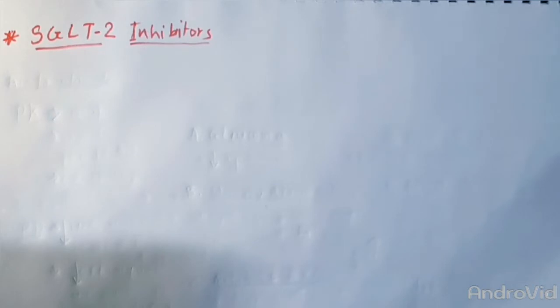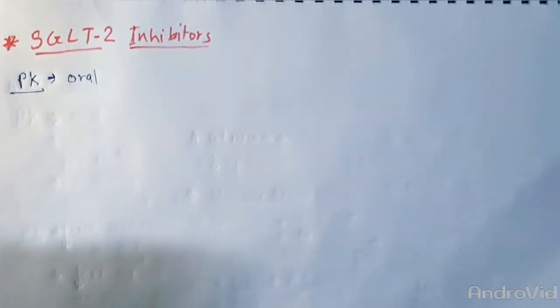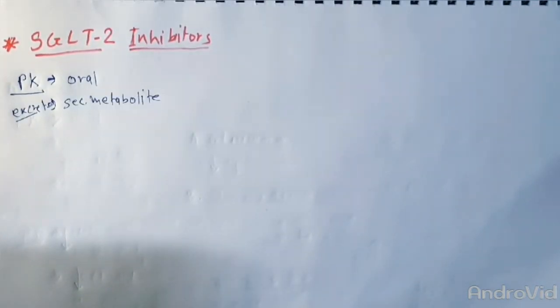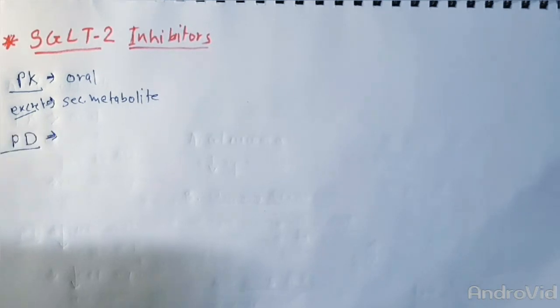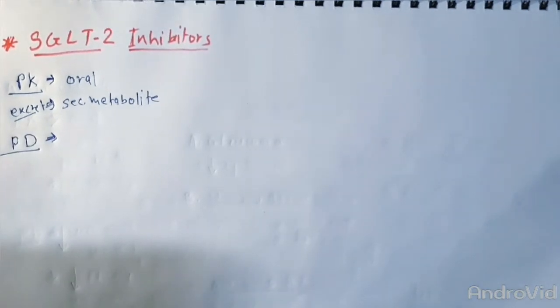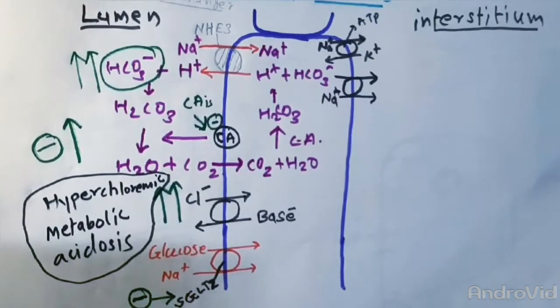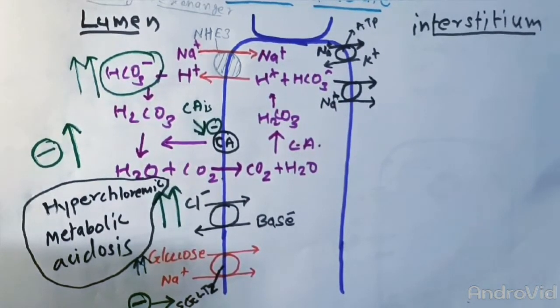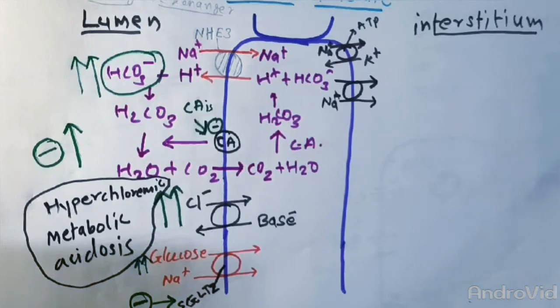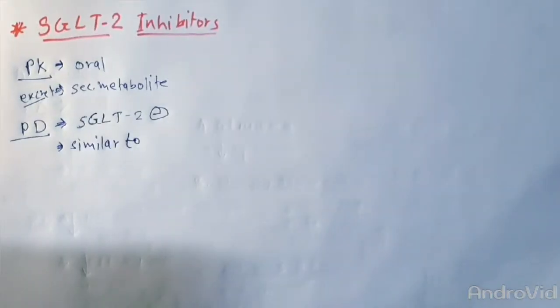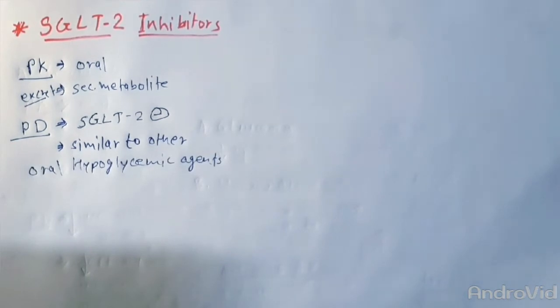Now let's talk about SGLT2 inhibitors. Talking about pharmacokinetics, these are oral drugs mostly excreted in the form of metabolites. Talking about pharmacodynamics, as their name suggests, they inhibit sodium glucose transporter 2. Here, glucose will increase in the lumen and the excretion of glucose will be more.